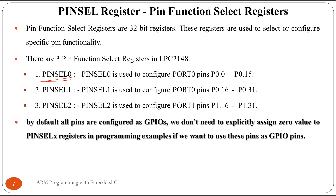Pin select 0 register is used to select the functionality of pins p0.0 to p0.15. Pin select 1 register is used to select the functionality of p0.16 to p0.31. Pin select 2 is used for p1.16 to p1.31. By default, all pins are configured as GPIO pins, which means if you want to use a particular pin as a GPIO pin, there is no need to configure the pin select registers — you can directly access the GPIO pins.